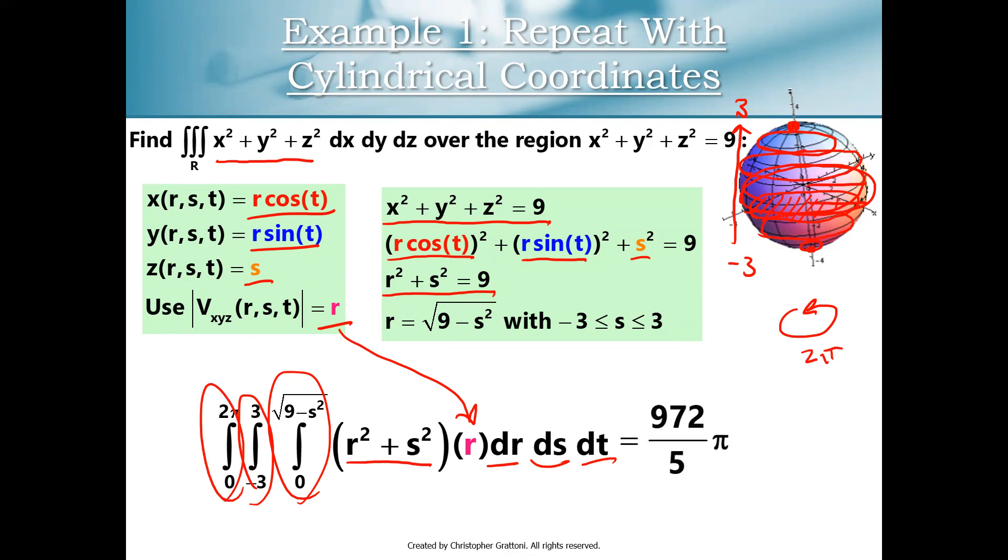Now if you were to crunch the numbers on that, you would get 972 pi over 5. This is a more difficult integral to compute by hand. Mathematica makes very quick work of it though. So my advice would be if you have to do this particular triple integral by hand and you're given a choice about what coordinate system to use, the better coordinate system for this would definitely be spherical coordinates.